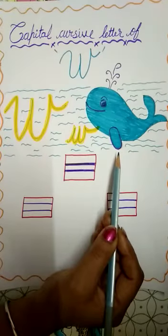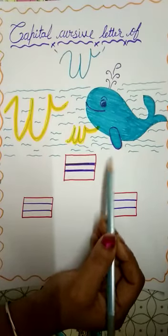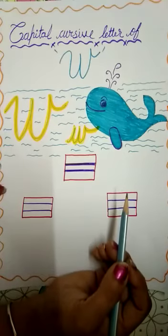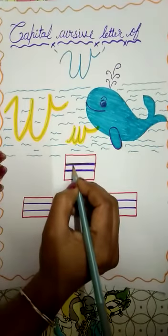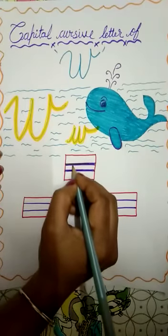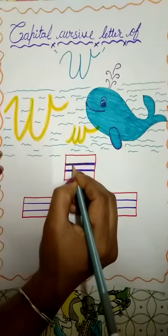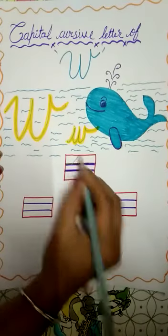Okay kids, now we will write down W. Okay. See kids, first you have to see that how to write. For that, you have to do slanting line like this. Okay. You have to do slanting line.